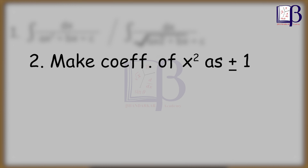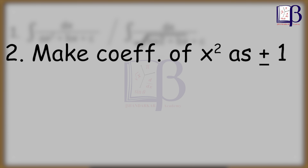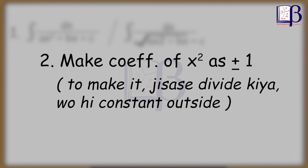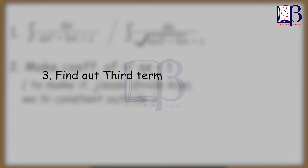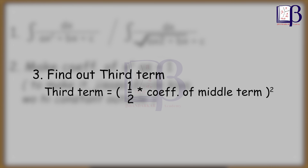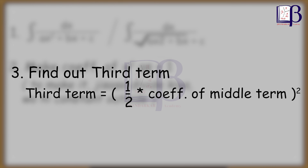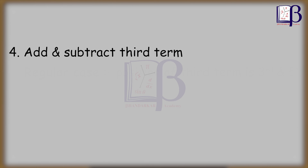Make the coefficient of x² equal to plus 1 or minus 1. Divide by that coefficient and take that constant outside. Then find the third term: the third term equals one-half times the coefficient of the middle term, whole bracket squared.